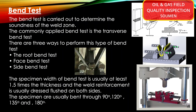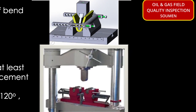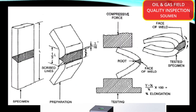The second test is the bend test. The bend test is carried out to determine the soundness of the weld zone. The commonly applied bend test is the transverse bend test. There are three ways to perform this: the root bend test, face bend test, and side bend test. The specimen width is usually at least 1.5 times the thickness, and the weld reinforcement is usually dressed flush on both sides. The specimens are usually bent through 90, 120, 135, or 180 degrees. When the bend is placed on the face side it is a face bend; when placed on the root side it is a root bend.